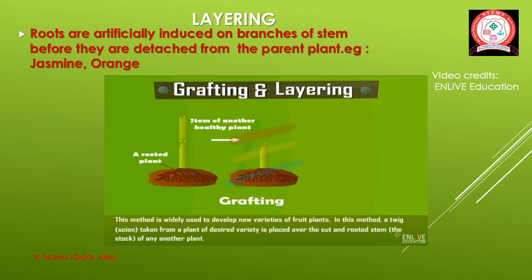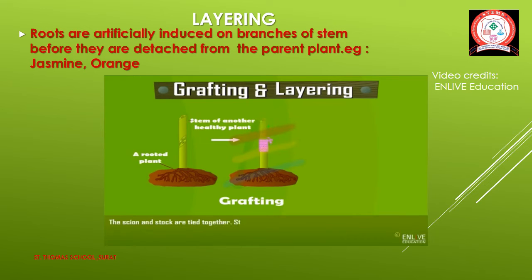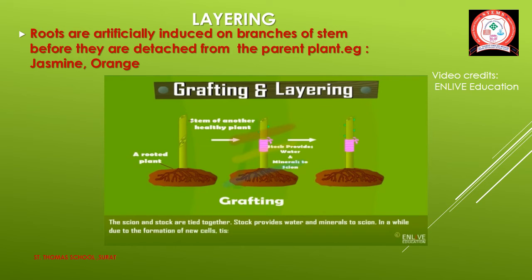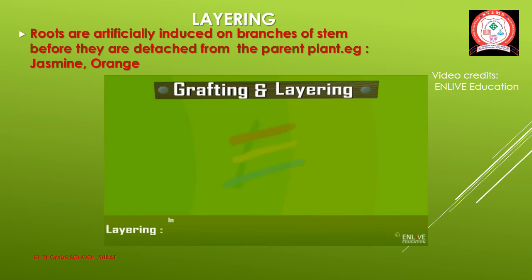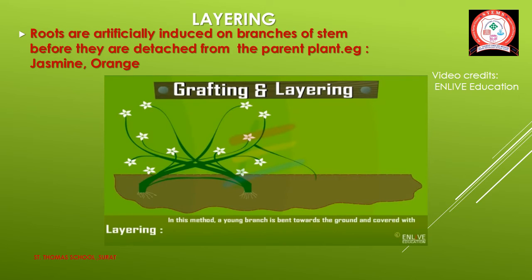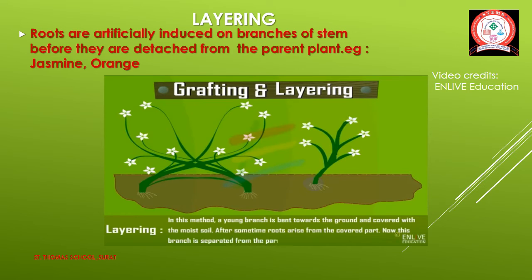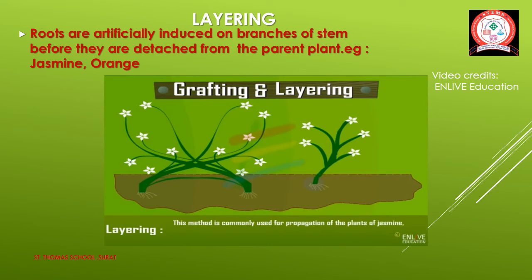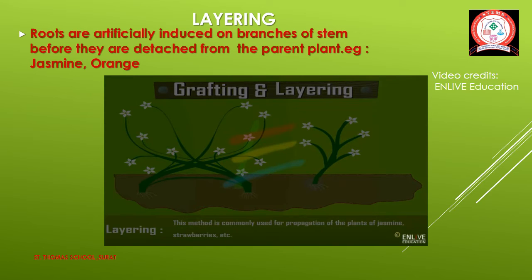Grafting is widely used to develop new varieties of root plants. The twig taken from a plant of desired variety is placed over the cut and rooted stem of another plant; the scion and stock are tied together. The stock provides water and minerals to the scion, and new cell tissues of stock and scion join together to form a new plant. In layering, a young branch is bent toward the ground and covered with moist soil; after some time roots arise from the covered bark, the branch is separated from the parent plant and allowed to grow as a new plant. This method is commonly used for jasmine, strawberries, etc.